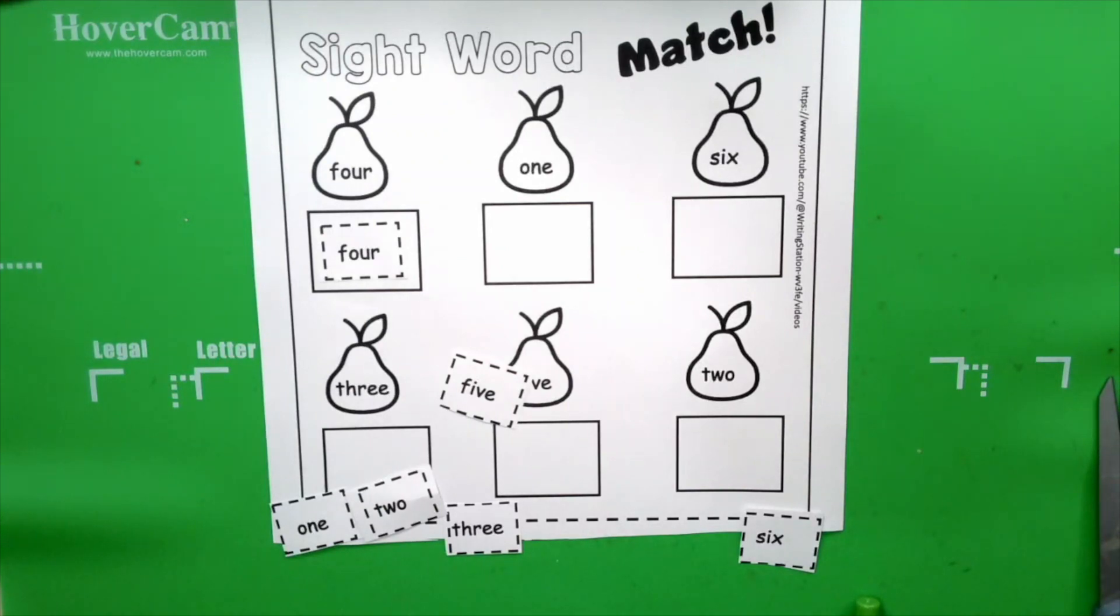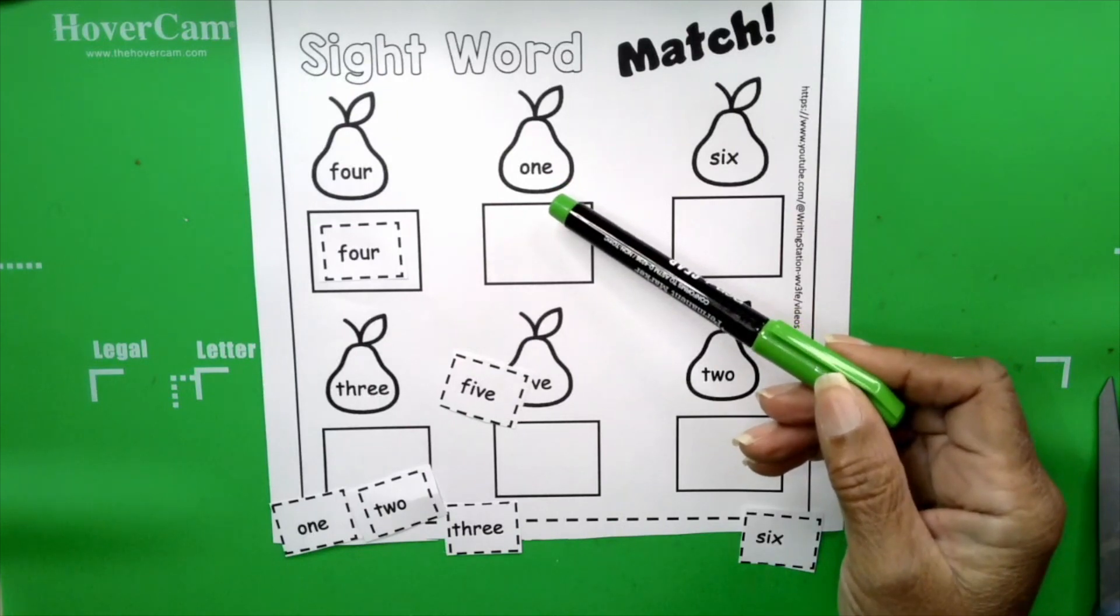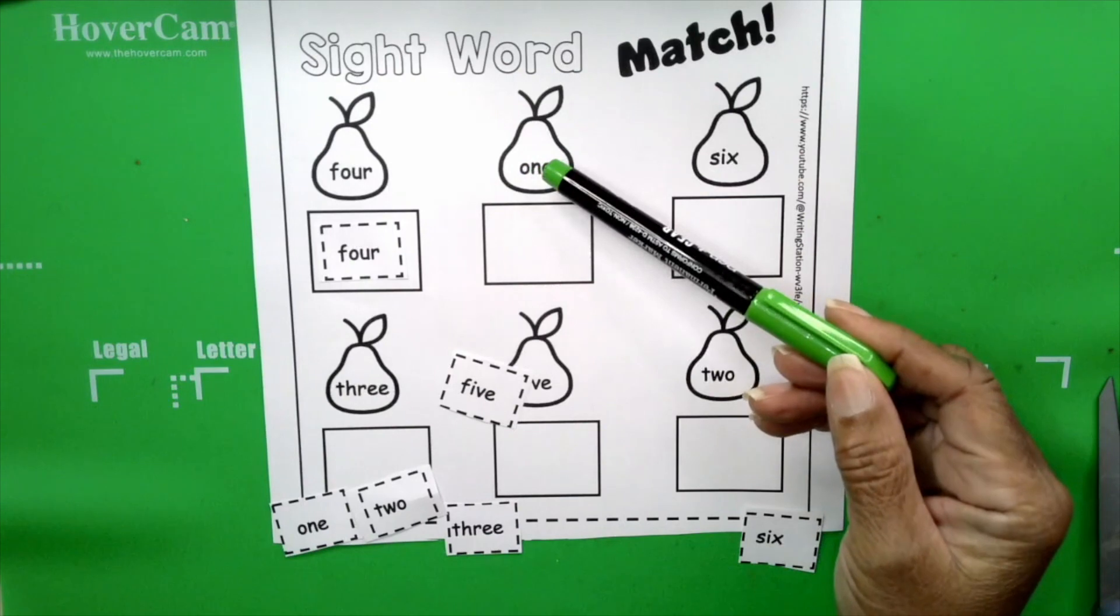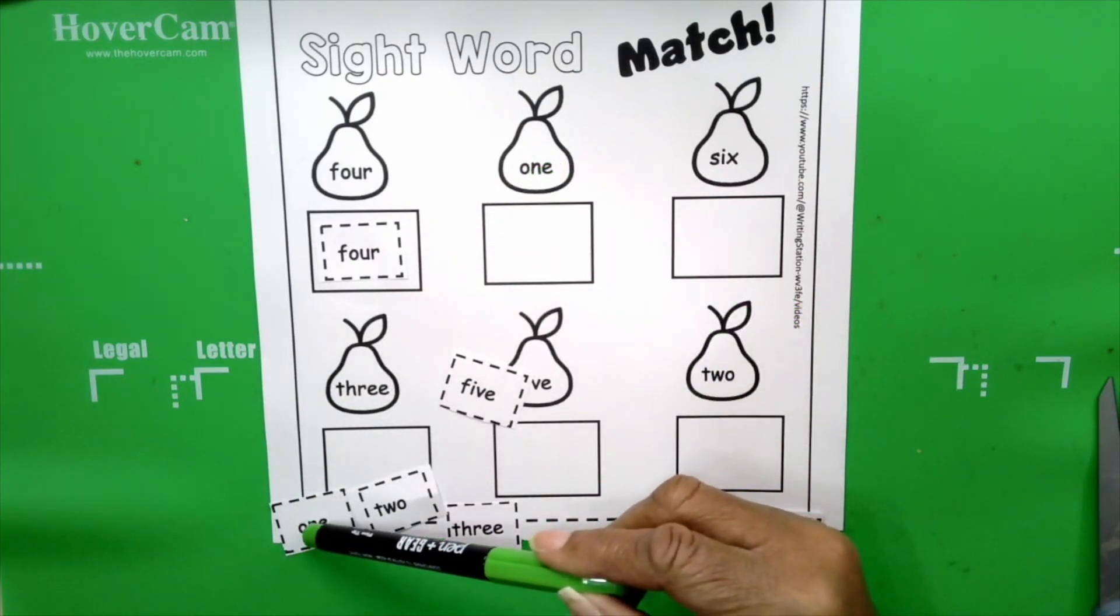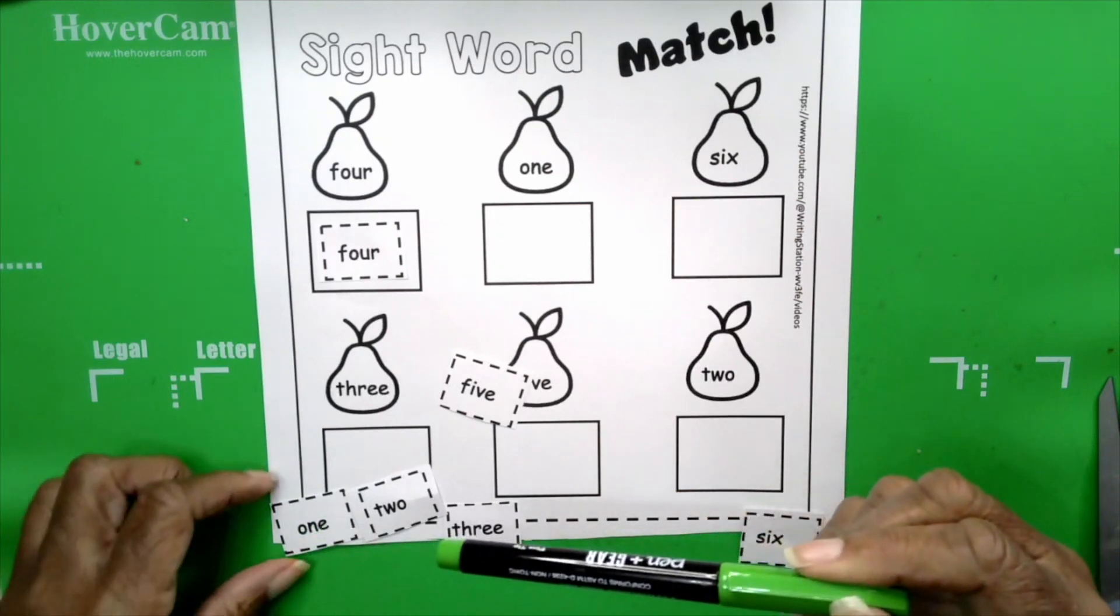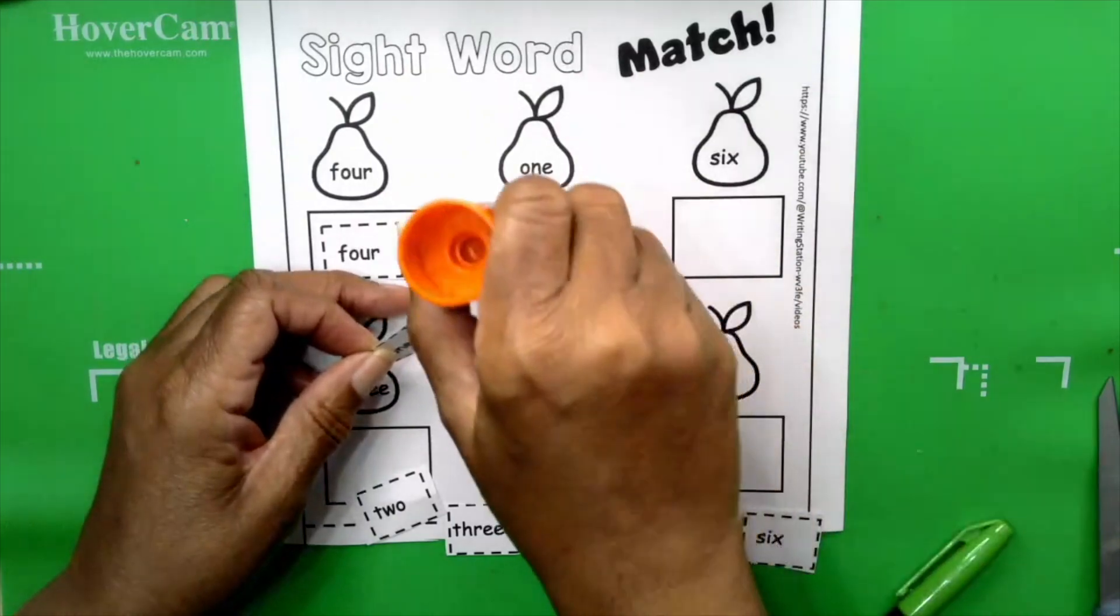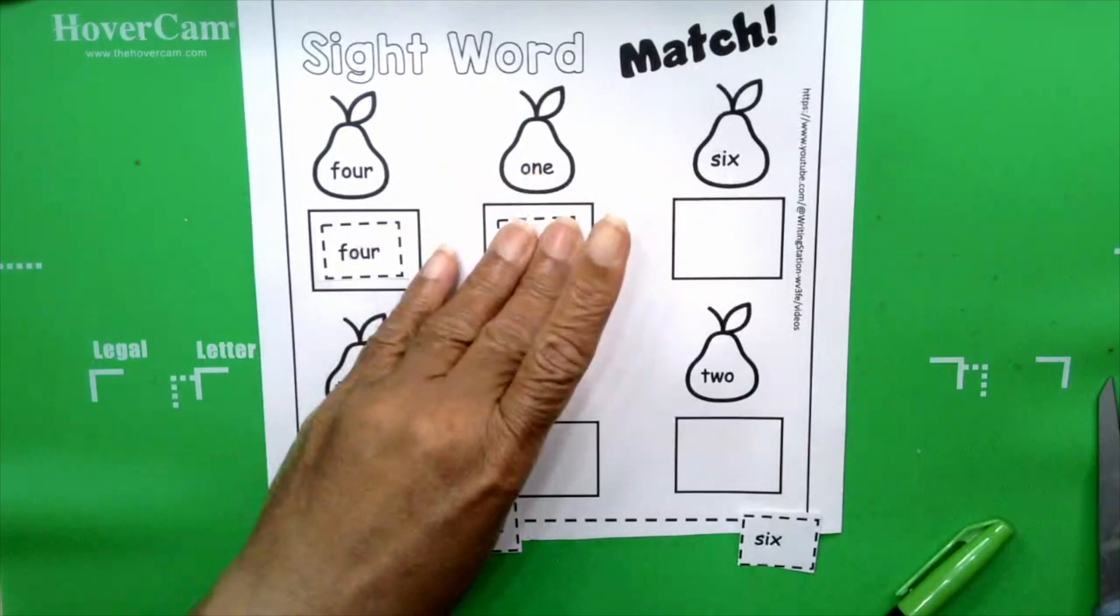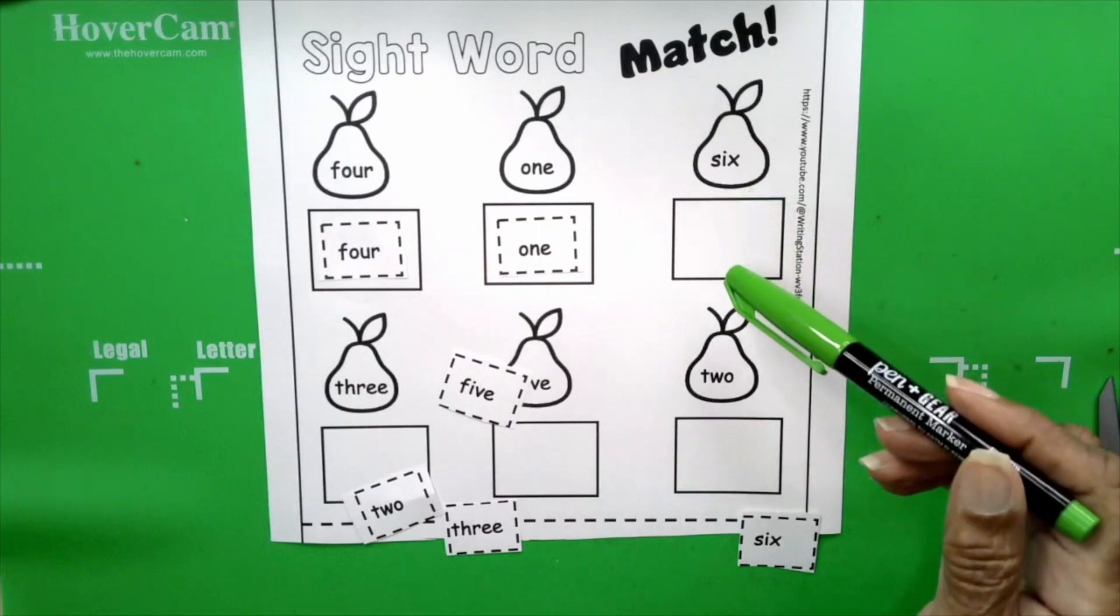Okay, the next word is one. Say it. One. How do you spell one? O-N-E. Do we have a word that starts with O and has an N and an E? Yes. This one. One. Okay. We're doing just fine, boys and girls.